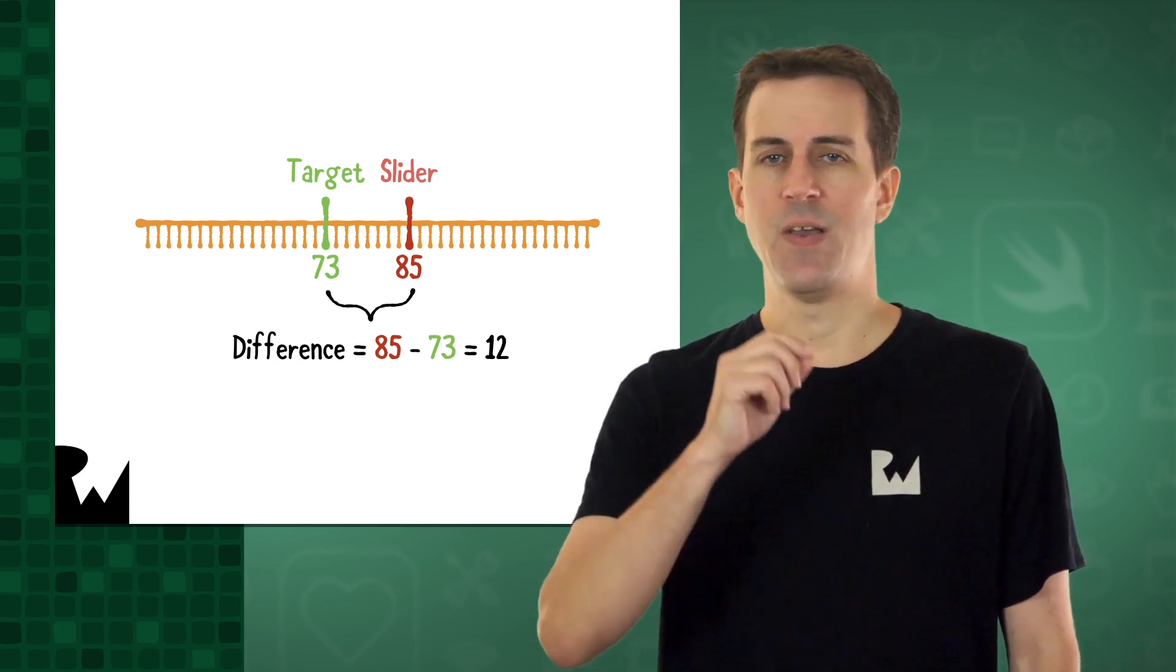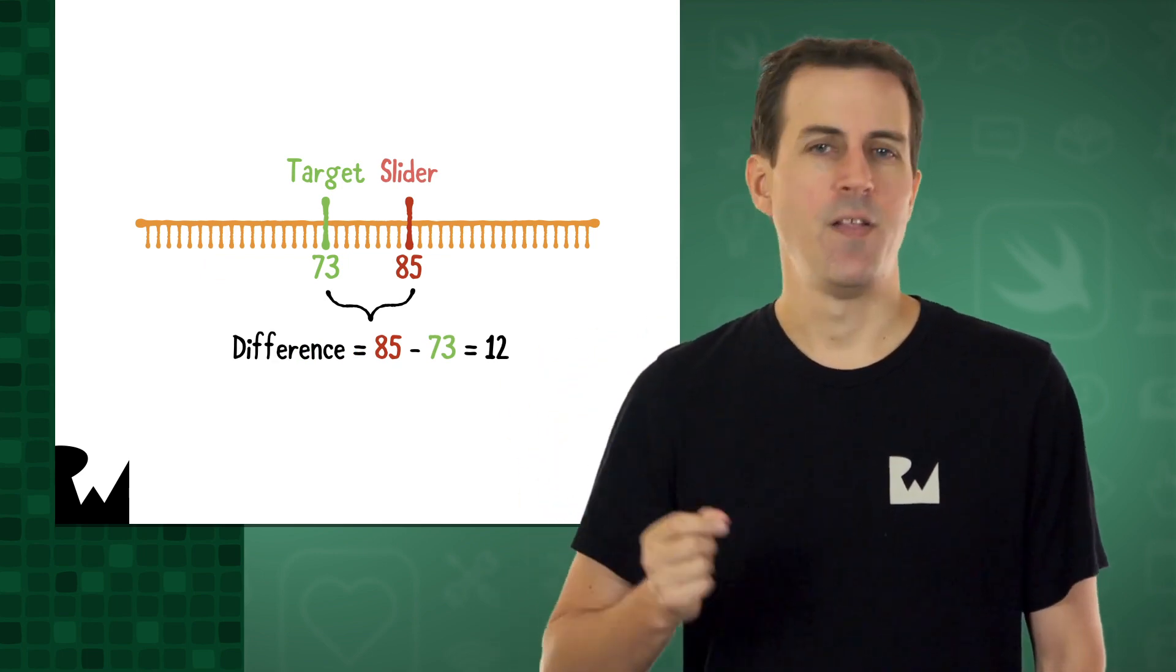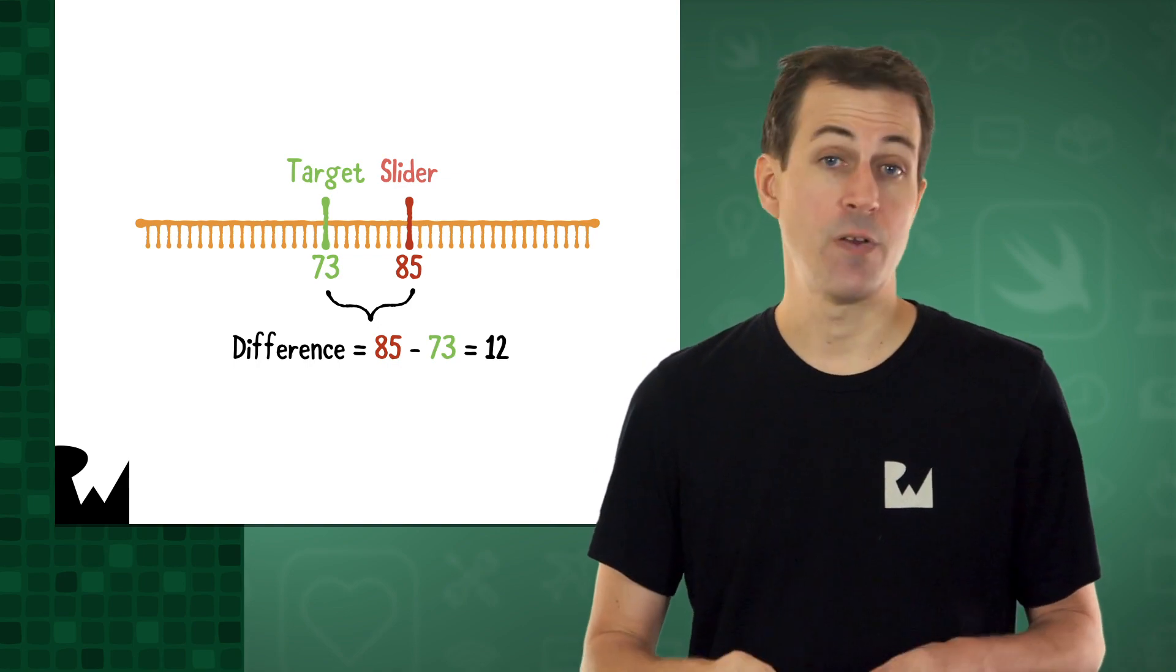Similarly, if the target is 73 and the player drags the slider to 85, then the player is within 12 of the target, so the difference should be 12.